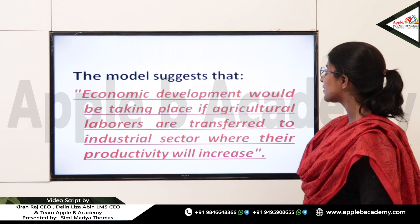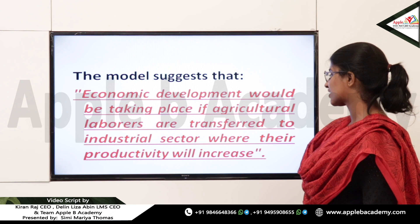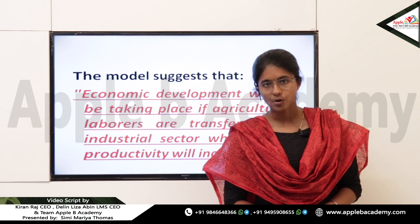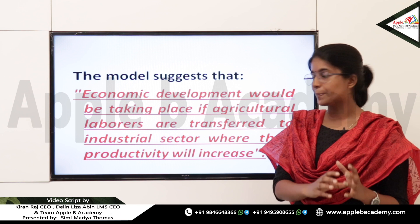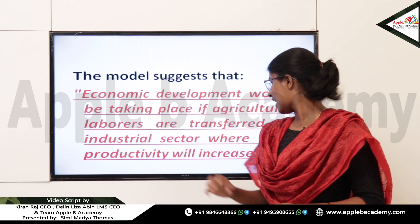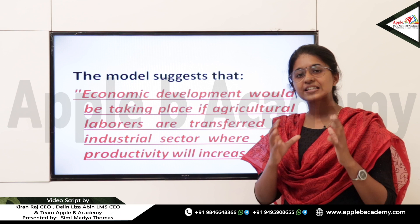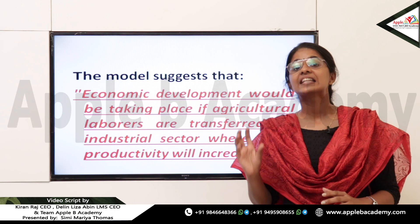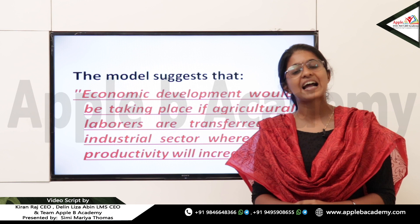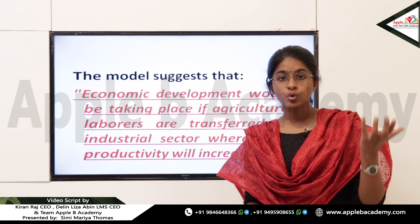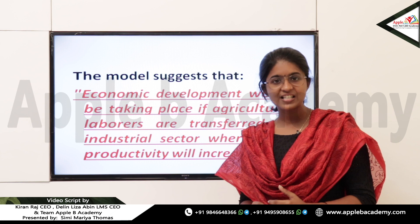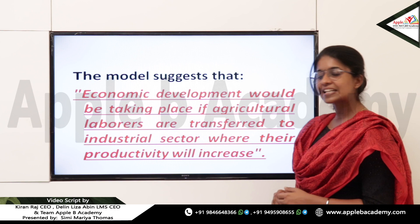The model suggests that economic development would take place if agricultural labourers are transferred to the industrial sector where their productivity will increase. As per the Fei-Ranis model, developed in 1964 as an extension of Lewis model, if labourers in the agricultural sector are transferred to the industrial sector, their productivity will increase and economic development can be attained.